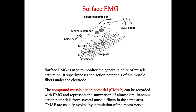To overcome this limitation, we can use surface EMG. Surface EMG is used to monitor the general picture of muscle activity. Surface EMG can superimpose the activation potentials of the muscle fibers under the electrode. Here we use electrodes attached on the surface of the muscle. There is a concept named the compound muscle action potential, CMAP. CMAP is a very useful measurement that can be recorded with surface EMG, and it represents the summation of almost simultaneous action potentials from many muscle fibers in the same area.